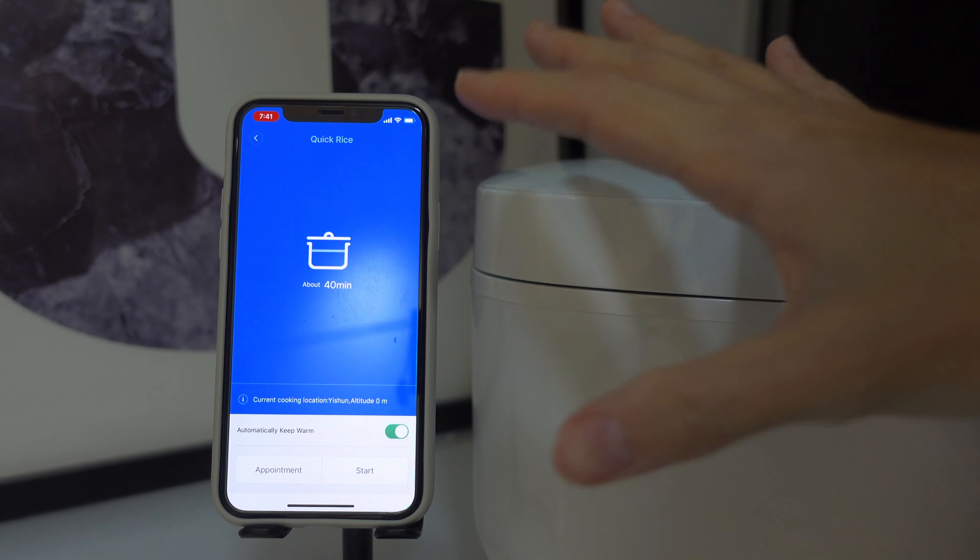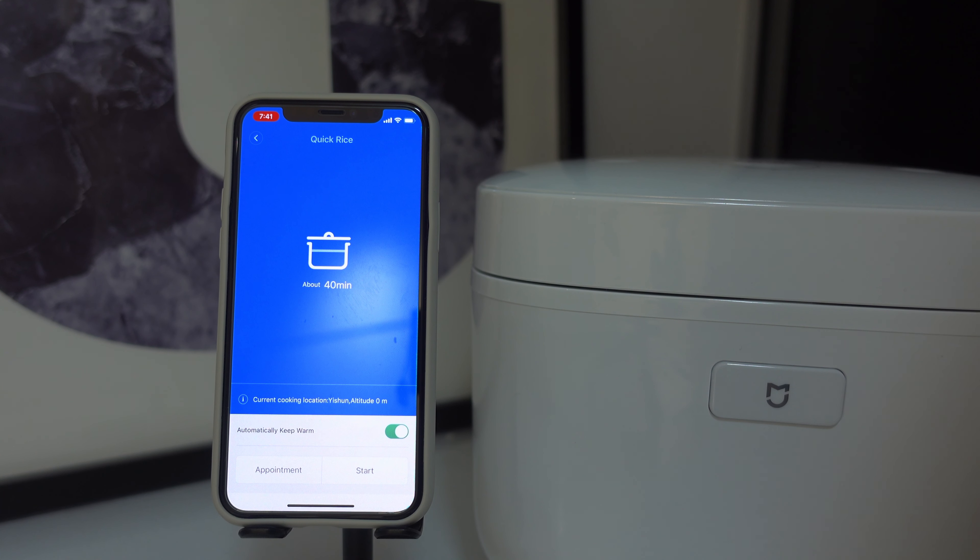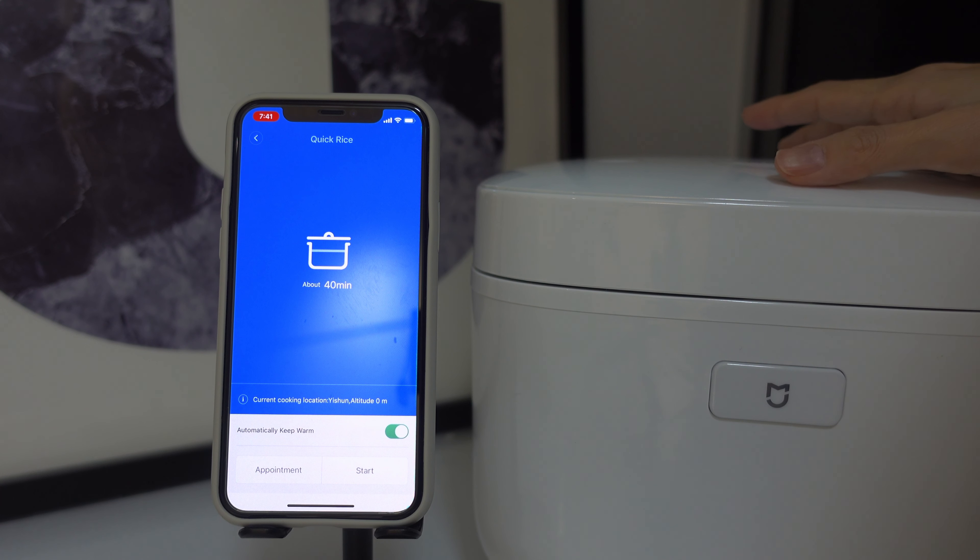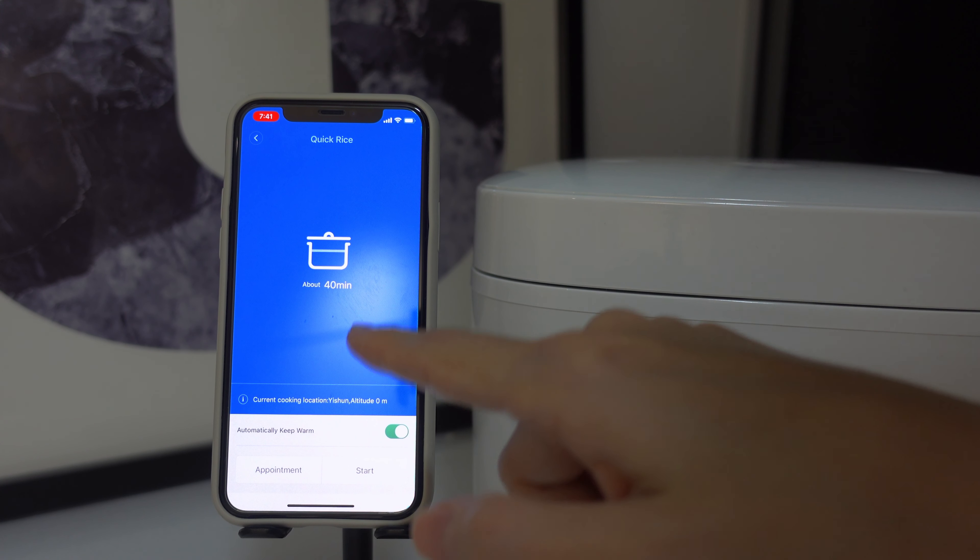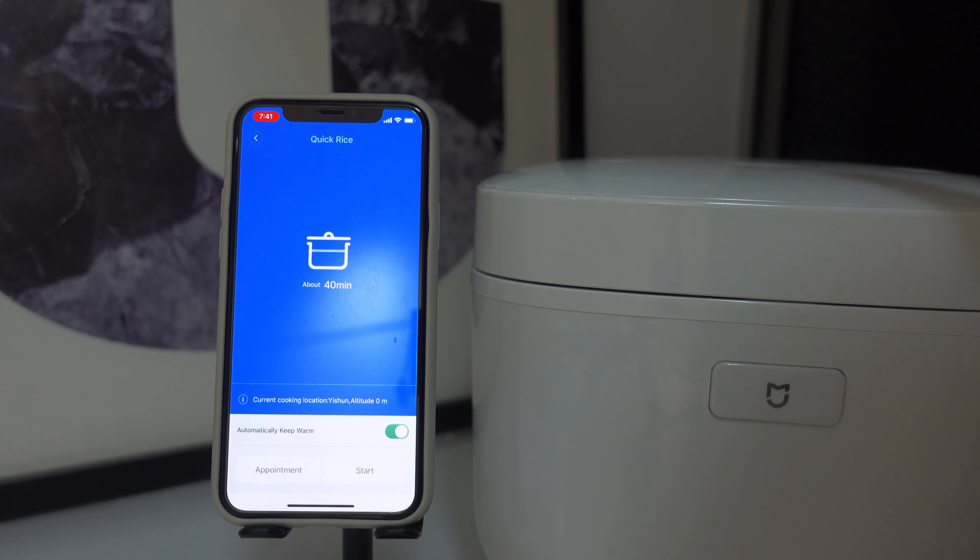Quick rice takes about 40 minutes and it will automatically keep warm. As I was saying, the good thing about using an app is that if you're leaving work at 7 o'clock and reaching home at 8, you just got to wash your rice, cut up the vegetables, put it in, and at 7 o'clock just before you leave work, just hit the start button and this will start cooking. When you reach home, everything will be ready for you.